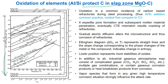CTE mismatch results in the cracking of refractories. Gradual atomic diffusion alters the microstructure and thus causes corrosion of refractories. The Ellingham diagram represents straight lines and slope changes corresponding to phase changes of the metal or compound, indicating a change in entropy.